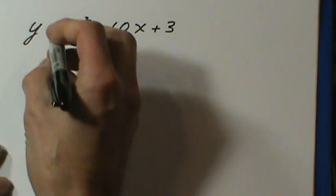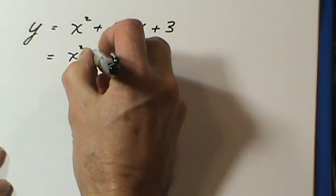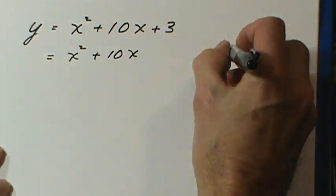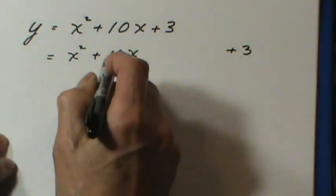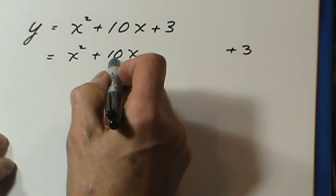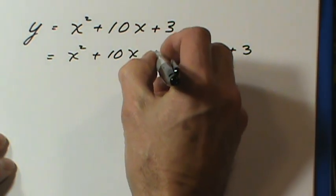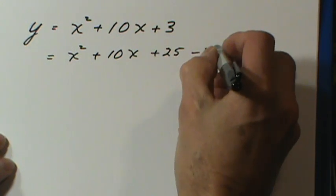Here's an example, and what I always do with these is I write down the first two terms and move the last term out of the way. The process goes like this: take half of the ten, which is five, square the five. Five squared is twenty-five, and you add twenty-five and you subtract twenty-five.